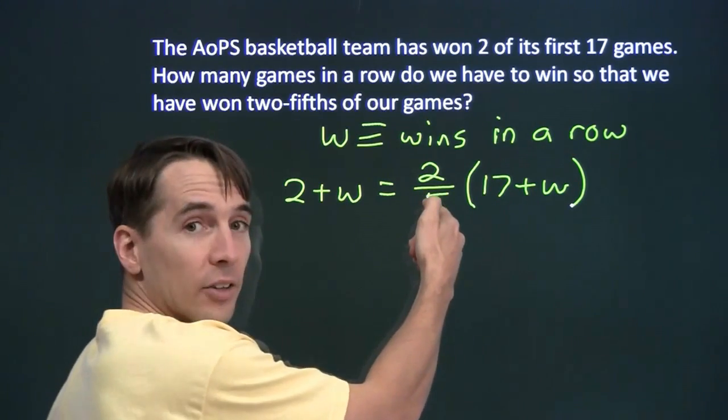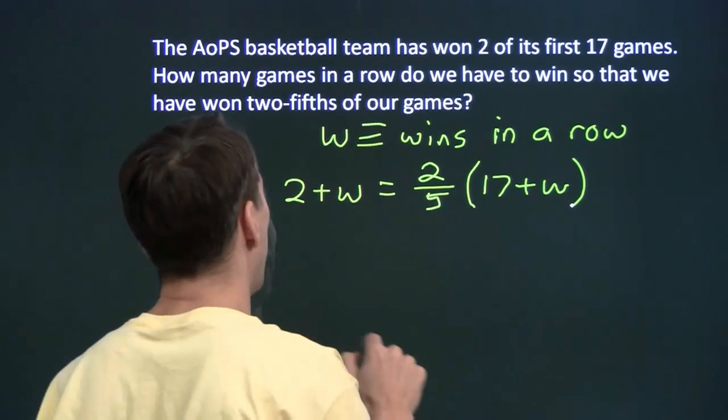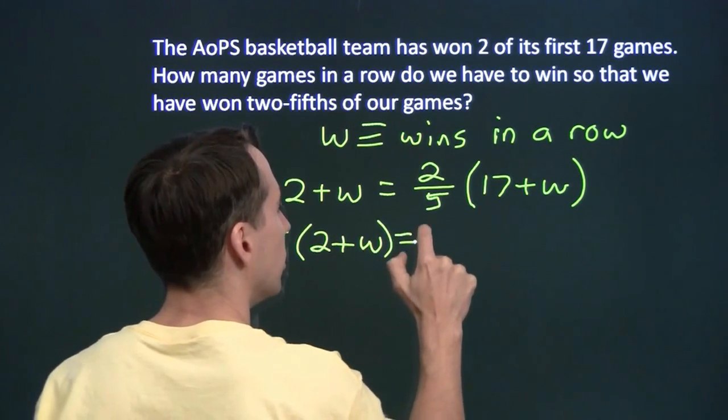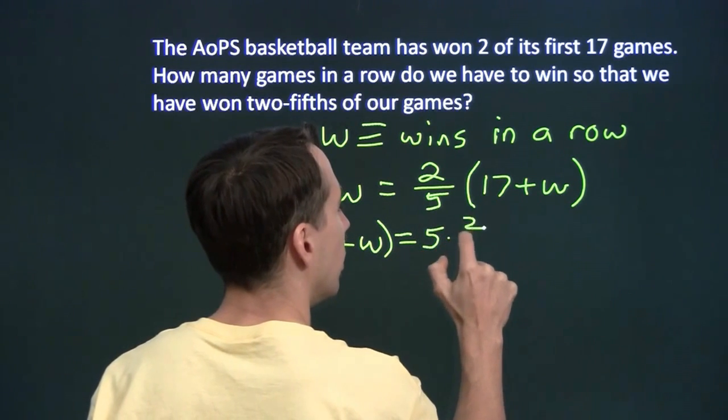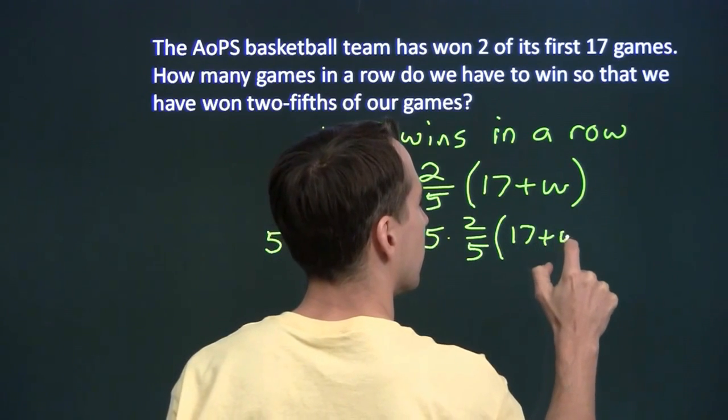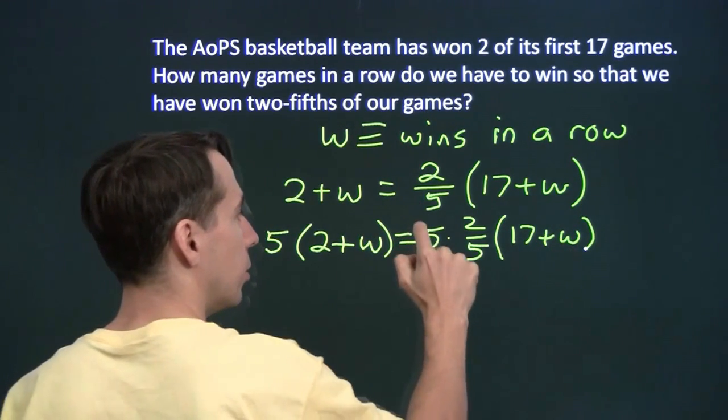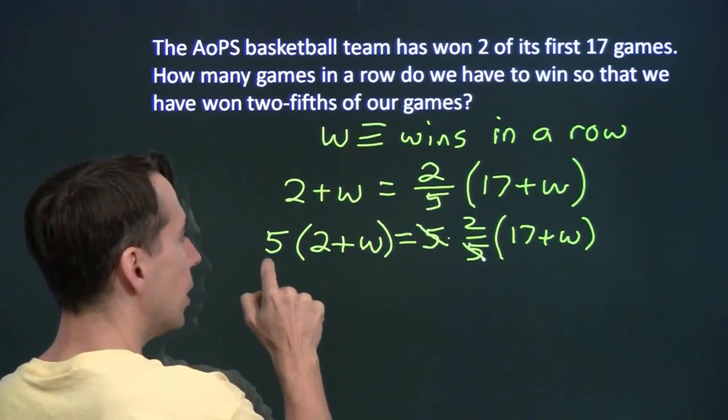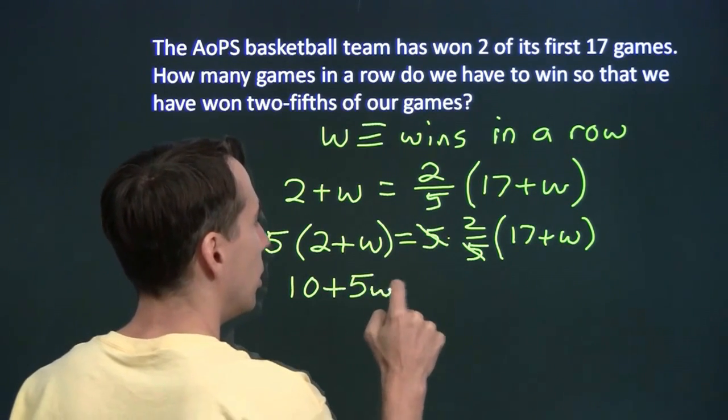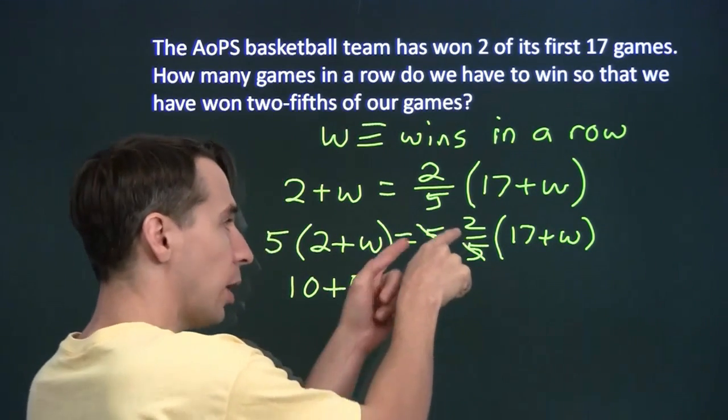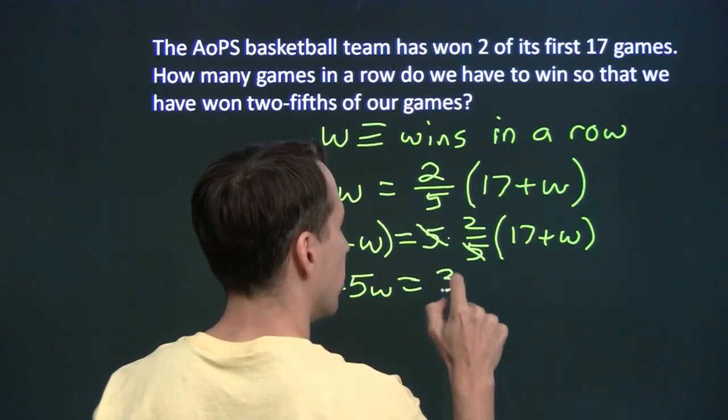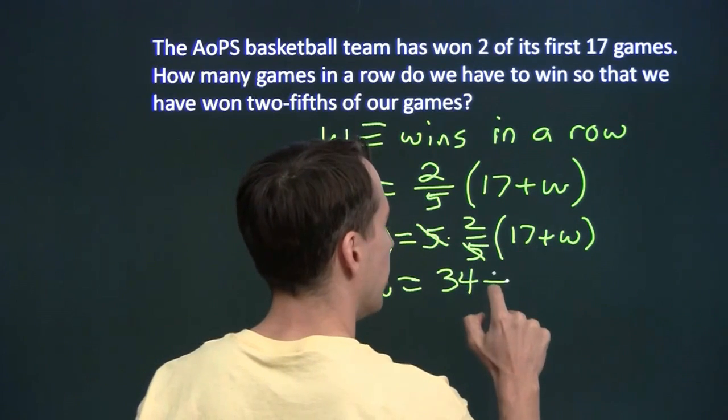We know how to solve this. First, we'll knock out the fraction. We'll multiply both sides by five. Over here on the left, we'll have five times two plus w. And over here on the right, we're multiplying by five to knock out the denominator, get rid of our fraction. The fives over here, sure enough, as planned, they'll cancel out. Over here on the left, we'll distribute. Five times two is 10, plus five times w. Over there, the fives have canceled, and we're left with two times the w plus 17. And we'll distribute that out as well. Two times 17 is 34. Two times w is just 2w.